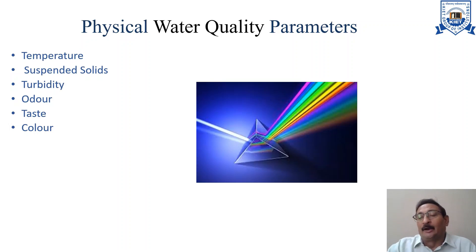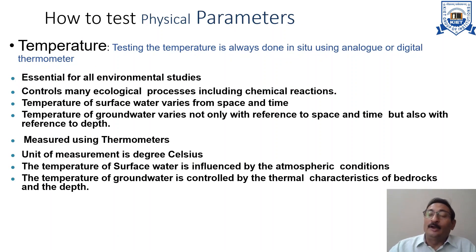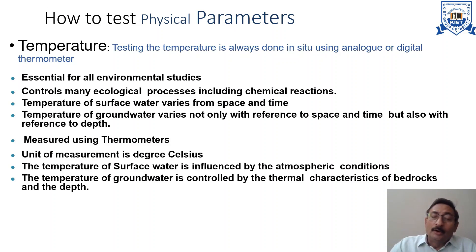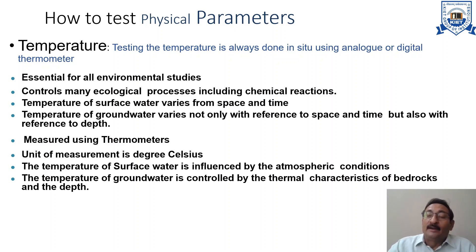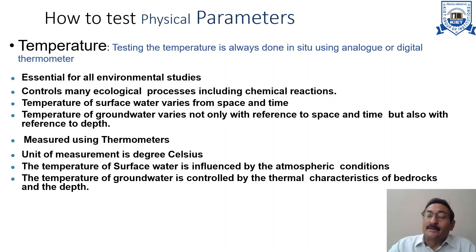Now, if we talk about temperature, this parameter is not used to evaluate water quality directly, but it is one of the most important parameters in natural surface water streams. Temperature governs to a large extent the biological activity and biological species present in the water. Chemical reactions that happen in water are also affected by temperature, and it has effects on the solubility of gases in water.